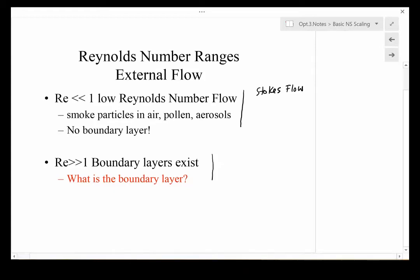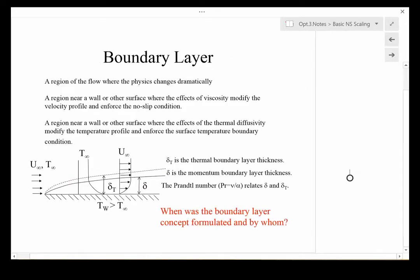Mathematically and otherwise, a boundary layer is a region where the physics of a problem change dramatically. In fluid mechanics, it's a region near the wall or other surface where the effects of viscosity are most felt, in the sense of enforcing the no-slip condition on the flow.